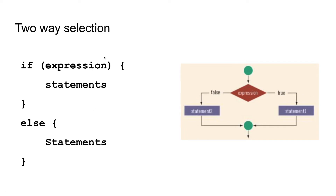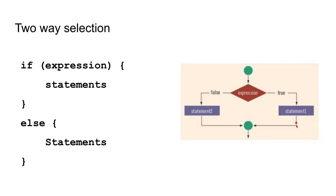The next type is two-way selection. Two-way selection tests some expression. If that expression is true, it will perform some set of statements. If that expression is false, it will perform some other set of statements. In both the true and false cases, it will continue to the same point in the program.